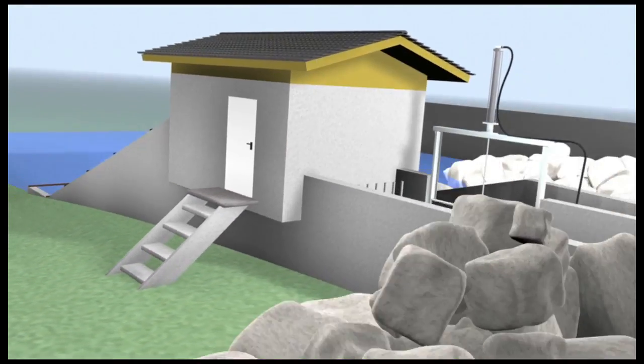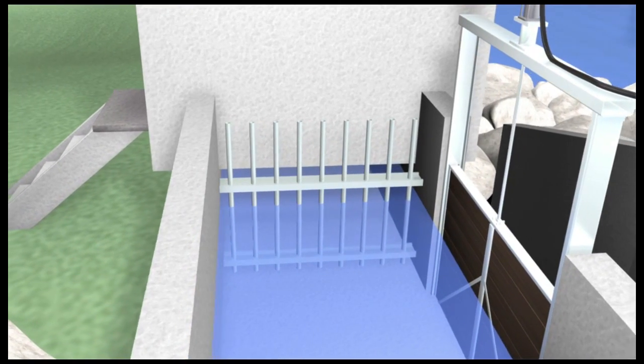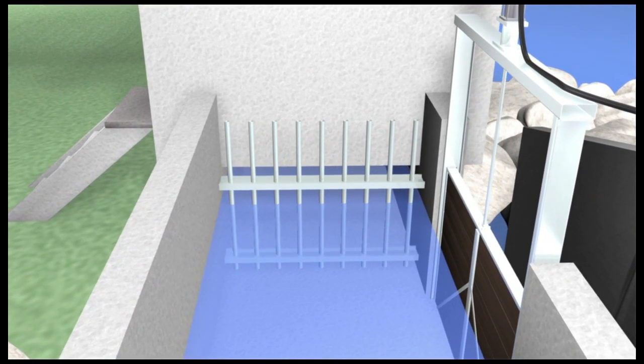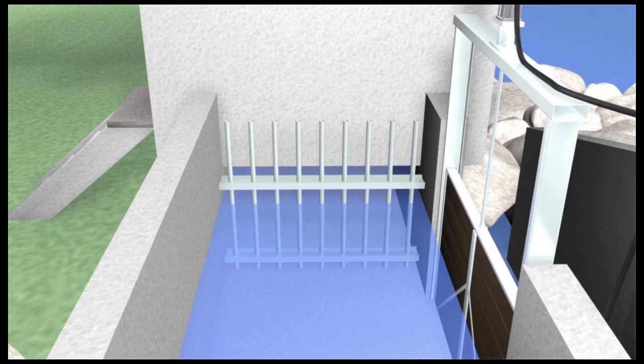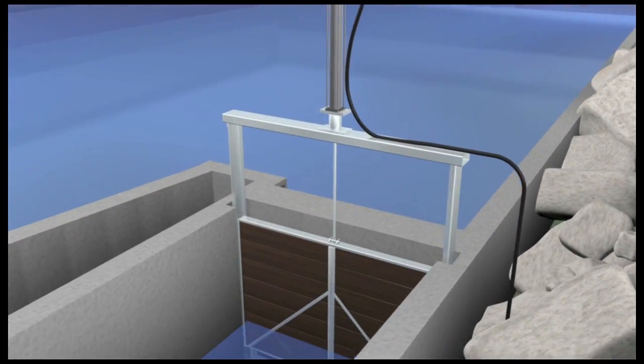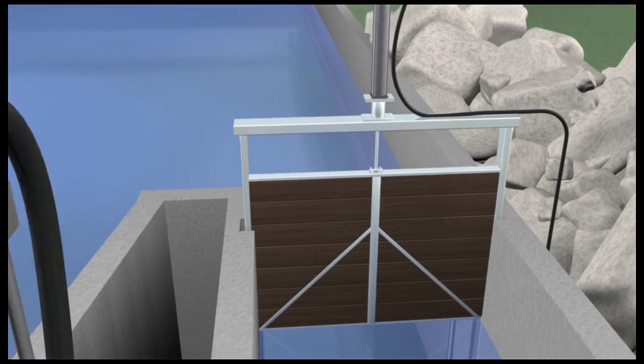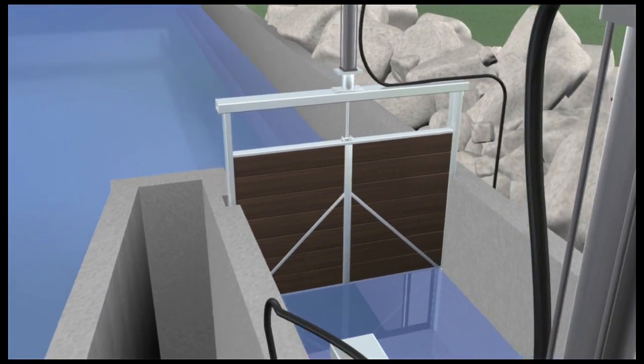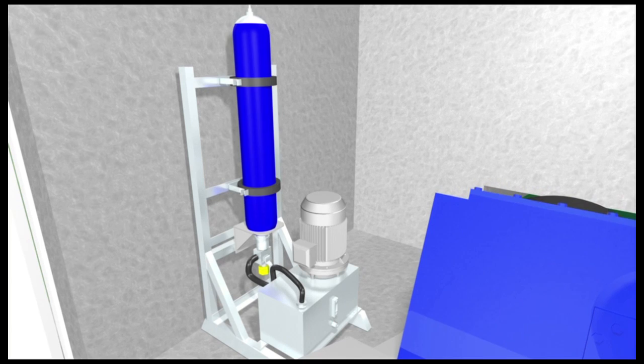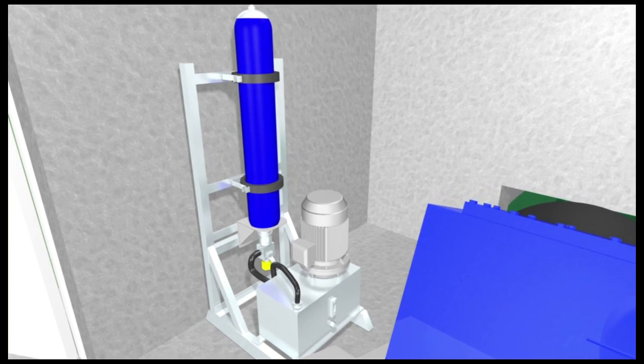The equipment consists of an inlet bar screen for security and to prevent large items entering the screw. A hydraulically controlled inlet gate is used to regulate the flow through the inlet channel and into the screw. A hydraulic power pack is used to provide the power to raise and lower the inlet gate in a controlled manner.